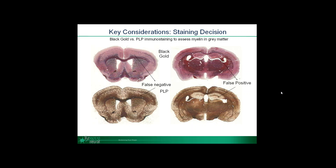Now that we've fixed and sectioned our tissue, the next consideration is making sure you're choosing the best stain to answer your question. There are many histological stains such as H&E, silver stain, and crystal violet that can give you a lot of information about the health of your tissue. However, when you start asking questions about what's happening specifically in disease, antibody staining can pick up where histological stains end.